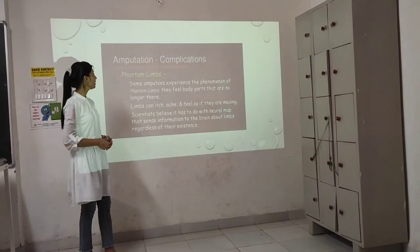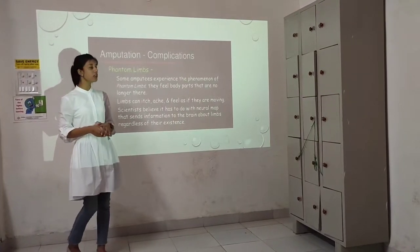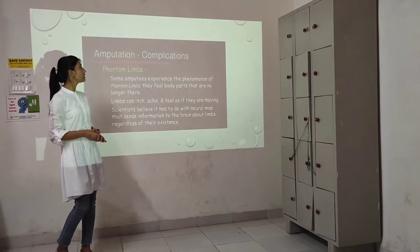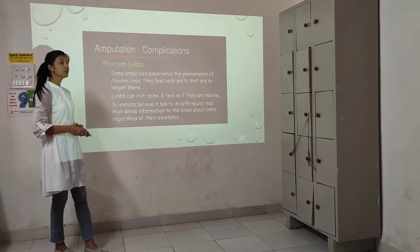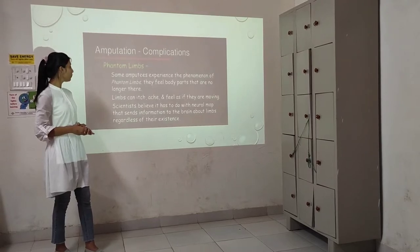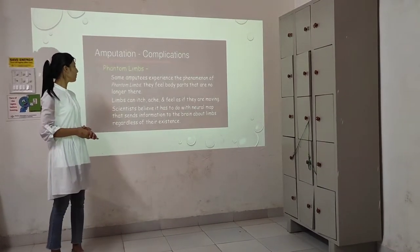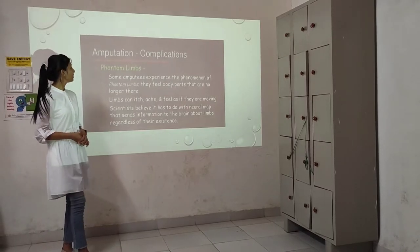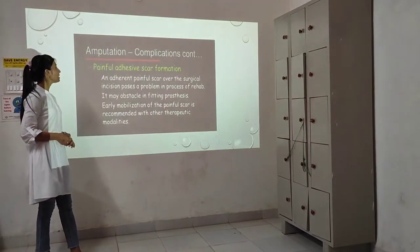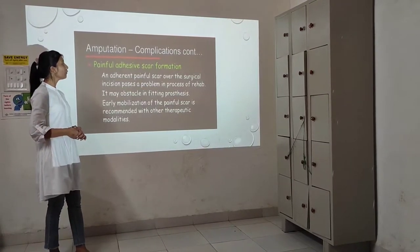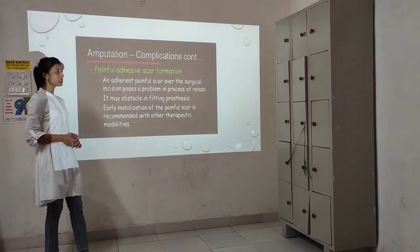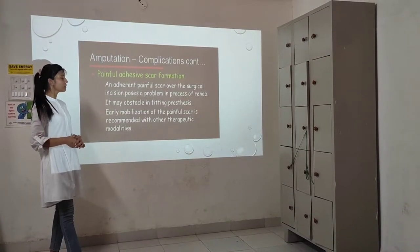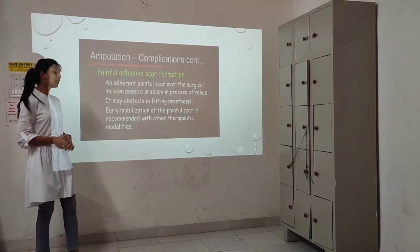Phantom limb is a complication where amputees feel body parts that are no longer there. The phenomena of phantom limb: they feel limbs can itch, ache, and feel as if they are moving. Scientists believe it has to do with neural maps that send information to the brain about the limb regardless of its existence. Another complication is painful adhesive scar formation — an adherent painful scar over the surgical incision poses a problem in the process of rehabilitation and may obstruct the fitting process. Early mobilization of the painful scar is recommended with other therapeutic modalities.